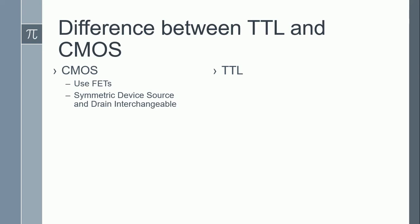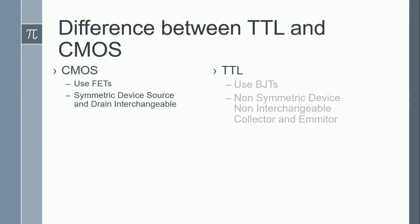The decision between source and drain is made based upon the voltage levels of the two terminals. Comparatively, TTL technology uses BJTs, or non-symmetric devices. This behavior of interchangeability that was present in CMOS technology does not exist in TTL. The collector and emitter, which are the extreme terminals of the BJT, are non-interchangeable — their physical structure is different from one another.